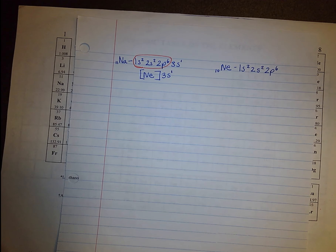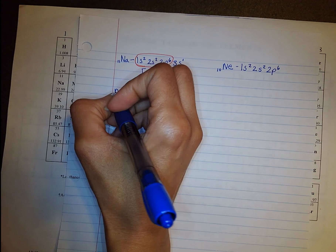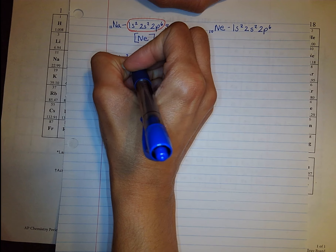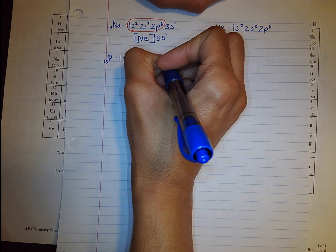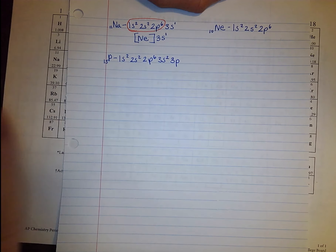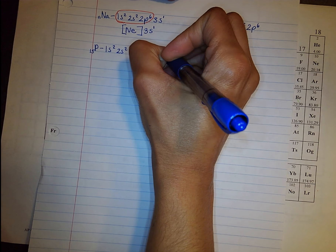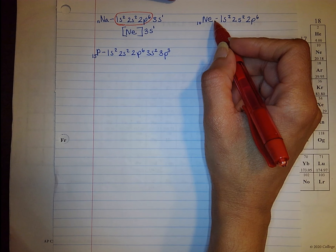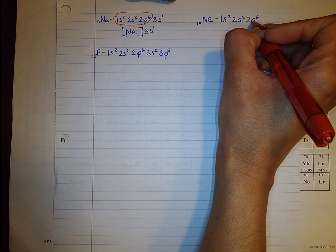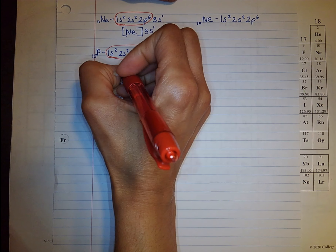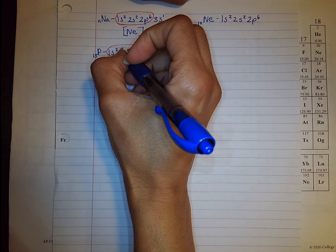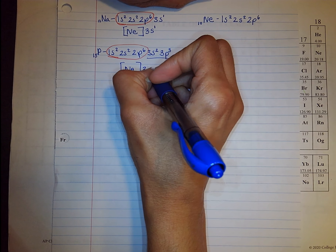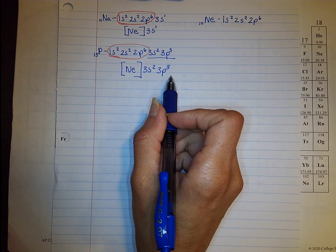Let's do one more element — phosphorus. Phosphorus has 15 electrons in it. You can always check by adding up your electrons. For phosphorus, the noble gas we're looking at is neon, which goes up to 2p6. So we're going to replace the phosphorus electron configuration with neon in brackets, and then write the remaining configuration: 3s2, 3p3. This is the noble gas notation for phosphorus.